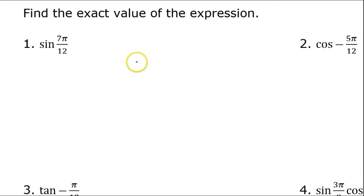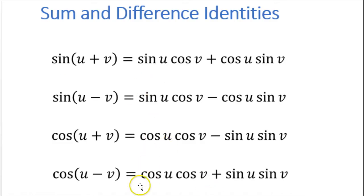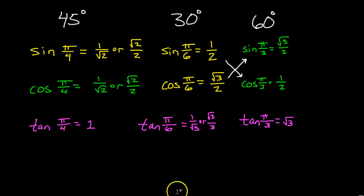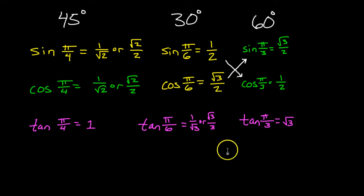In this video I will show you how to find the exact value of a trigonometric function when you don't have a special angle given. We will be using our sum and difference identities to make this happen. Throughout this process I will assume that you have memorized the facts for the special angles, so if you have not memorized these values you need to pause the video and memorize them right now.